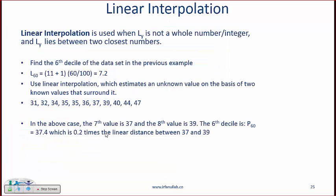Linear interpolation is used when ly is not a whole number or integer. So if we say sixth decile then you will get a location of 7.2. So what do you do? You look at the seventh value and the eighth value and then go 20 percent, actually 0.2 would then mean that, let's just do this with an example.